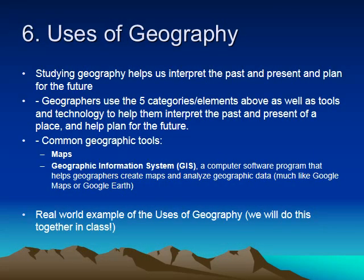The very last element is uses of geography — where we put all the previous elements together and ask: what good does it do us to study all this? Studying these elements helps us interpret the past and present and plan for the future. Geographers use all five previous elements as well as tools like maps and geographic information systems, or GIS — a computer software program that helps create maps and analyze geographic data to answer questions and problems. In class, we'll apply all five elements to a real-world scenario.